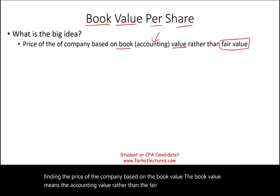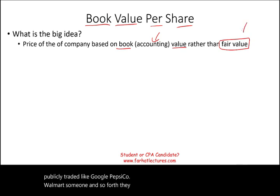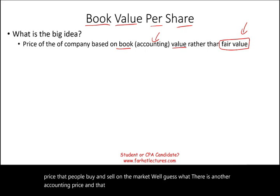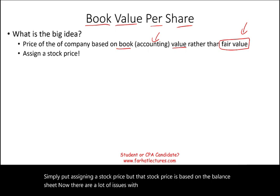Each publicly traded company — like Google, PepsiCo, Walmart — has a fair value price, meaning the price people buy and sell on the market. There is another accounting price called the book value per share: simply a stock price based on the balance sheet. There are a lot of issues with that, which we'll see in a moment.